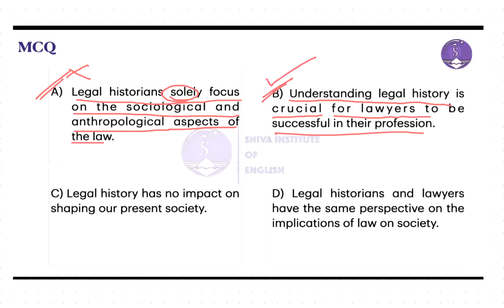Before confirming option B, let's see what option C states. Option C states that legal history has no impact on shaping our present society. However, the passage highlights how legal history helps us understand where we come from and how our society is shaped, indicating that legal history does have an impact on shaping our present society. This makes option C incorrect.